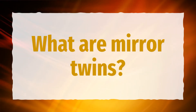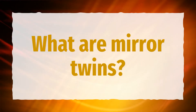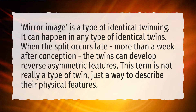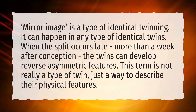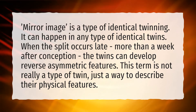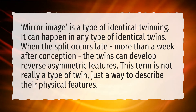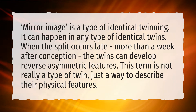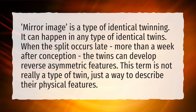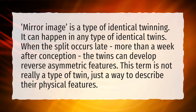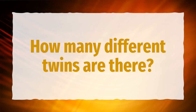What are mirror twins? Mirror image is a type of identical twinning that can happen in any type of identical twins. When the split occurs late — more than a week after conception — the twins can develop reverse asymmetric features. This term is not really a type of twin, just a way to describe their physical features.